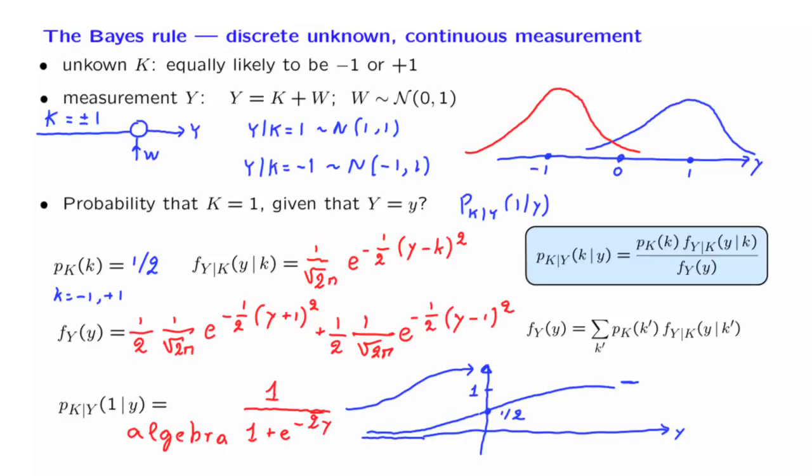Finally, if Y is 0, then we're just in the middle of the two possibilities, and by symmetry, either choice of K is equally likely. Therefore, the posterior probability that K is equal to 1, given that Y was equal to 0, that probability is 1 half. When Y is equal to 0, it's equally likely that either signal was sent.